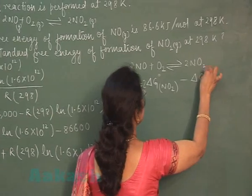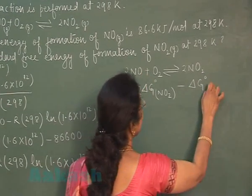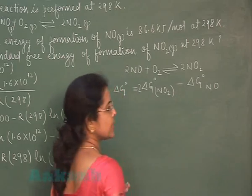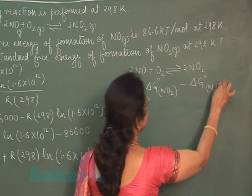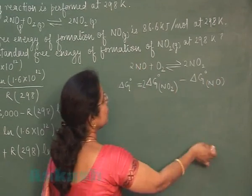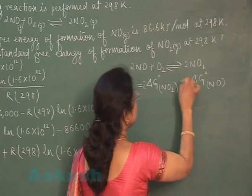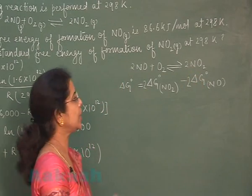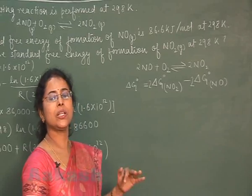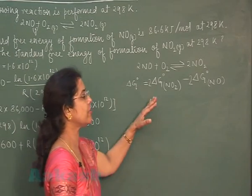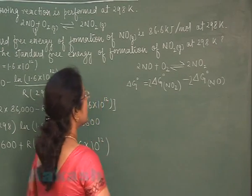Minus delta G0 formation of reactant. This is delta G0 formation of reactant. The reactant is NO. Coefficient is 2, so multiply this value by 2. Oxygen is an element and element's delta G0 formation value is 0.